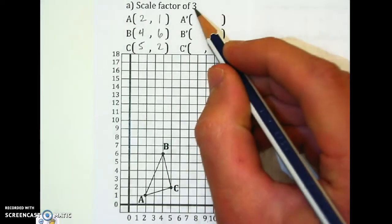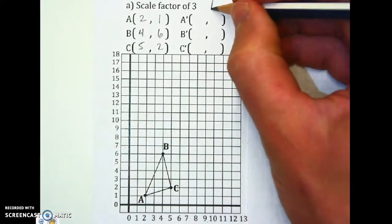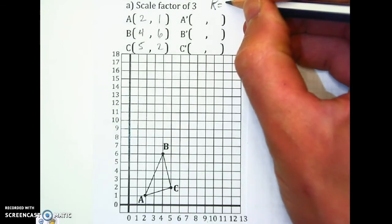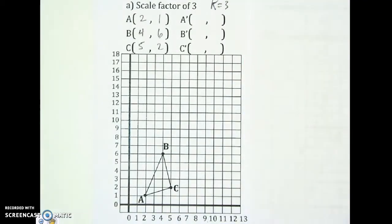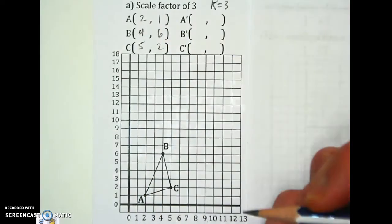Since I know my scale factor is 3, also it could say K equals 3. K is the symbol that represents scale factor. I'm going to just multiply every number by 3. It's that easy.